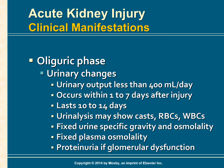With nephrotoxic drugs, onset may be delayed by as long as one week. The duration of the oliguric phase lasts on average about 10 to 14 days but can last months in some cases. The longer the oliguric phase lasts, the poorer the prognosis for complete recovery of kidney function.